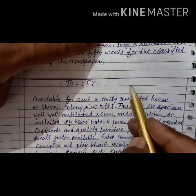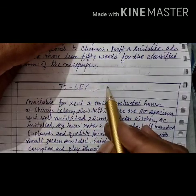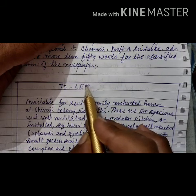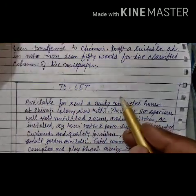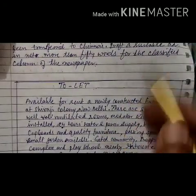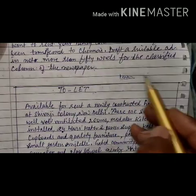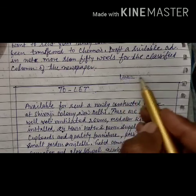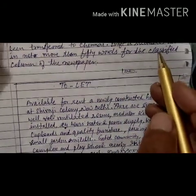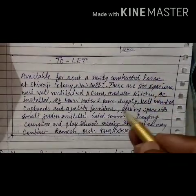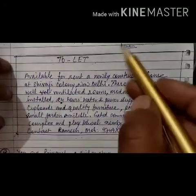A property given on rent is titled 'To Let.' It may be rented for five or six months depending on the tenant's requirement. If property is given on lease, it means the amount is taken in advance — for example, for one or two years — and whether the tenant uses the property or not is not the owner's concern after that.